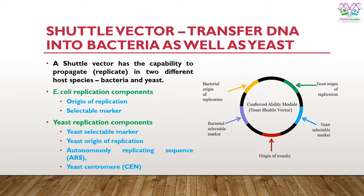How do these shuttle vectors work? Here is an example of a shuttle vector that can transfer its genetic material into bacteria as well as yeast. If it can transfer its DNA into bacteria and yeast, it should have an origin of replication for bacteria, selectable markers specifically for bacteria, a yeast selectable marker, and a yeast origin of replication. Additionally, shuttle vectors should have certain other elements required for replication in yeast, like autonomously replicating sequences (ARS) and yeast centromere sequences.